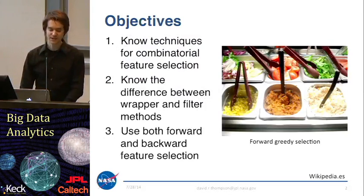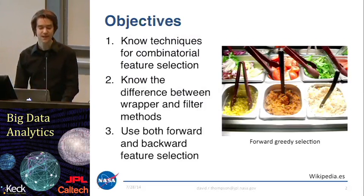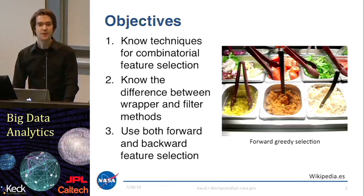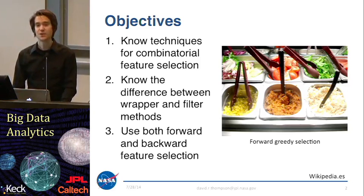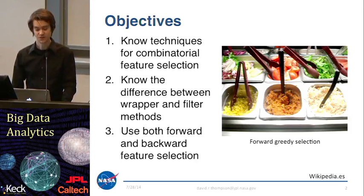The objectives of this module are to know and understand the techniques for combinatorial feature selection, and to have a couple of tools in your toolkit for finding informative features. There are two basic kinds of feature selection methods: wrappers and filters. You should know the difference between them, and also know different search strategies for searching for subsets of features. We're going to talk mostly about forward and backwards feature selection.